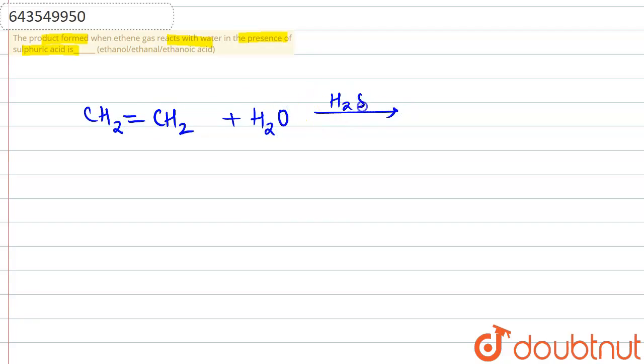So there is a direct reaction that will be happening over here, and the product that we would be getting is CH₃CH₂OH, that is ethanol. Okay, so ethene has been converted into ethanol.